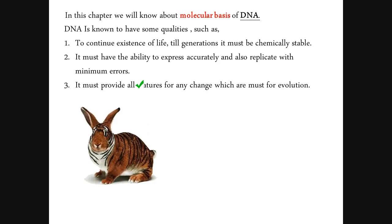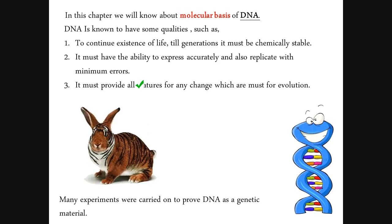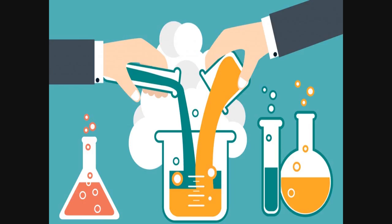When it replicates, it must provide all the features or characters which are required for change, in order for perspective evolution. There were many experiments carried on to prove that DNA was actually the genetic material. First it was believed that protein was the genetic material, but we will see in this chapter by various experiments that it was actually proved that genetic material is made up of DNA.